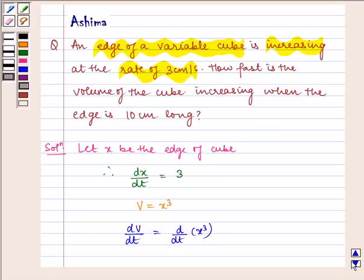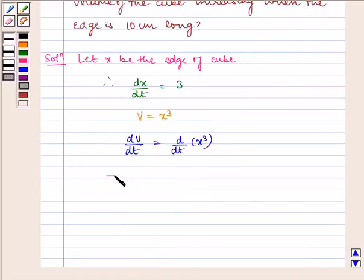Now by chain rule, this implies dV/dt = 3x² dx/dt.